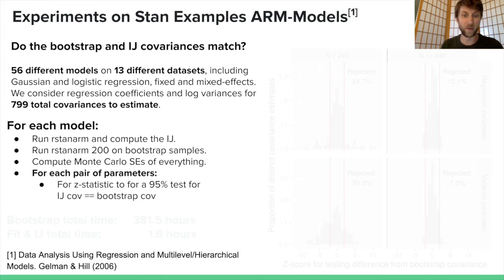When we did this, the bootstrap took much longer. It took about 200 times longer, because that's how many bootstrap samples we drew. To run on all the models, it took 382 hours for the bootstrap, and only an hour and a half to compute RStanARM and the IJ covariance. The IJ covariance takes essentially no time once you have the original MCMC samples.